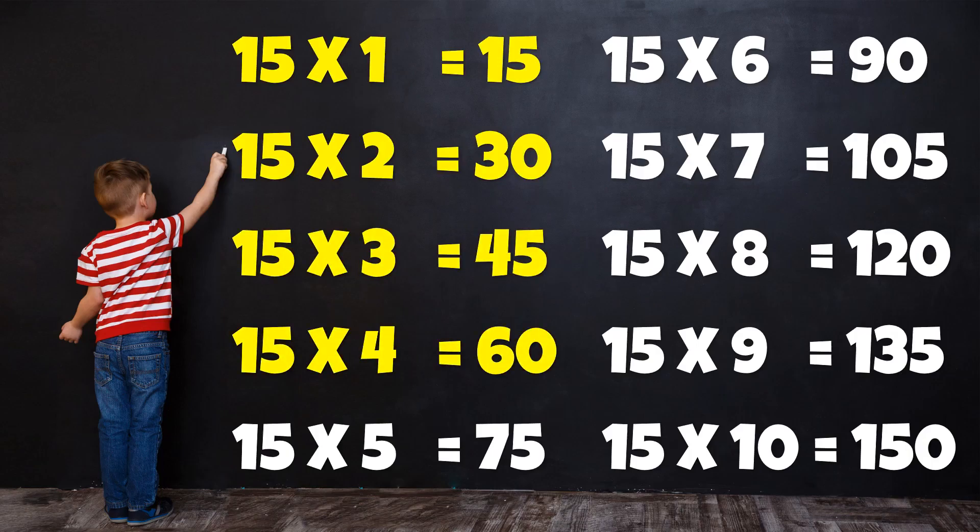15 4s are 60, 15 5s are 75, 15 6s are 90, 15 7s are 105, 15 8s are 120.